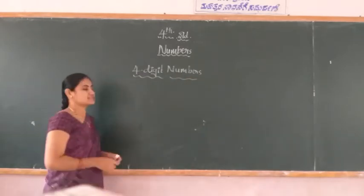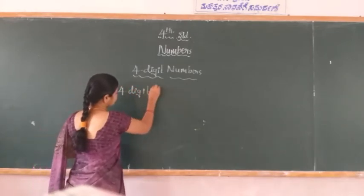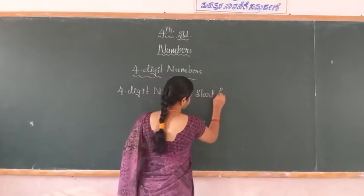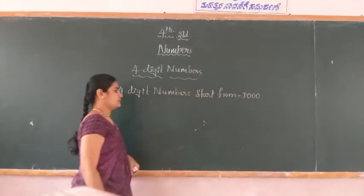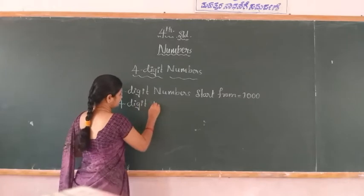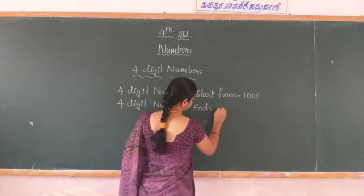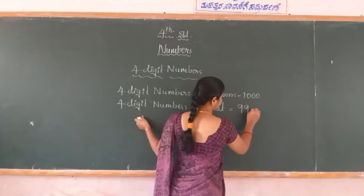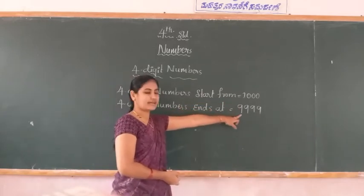4-digit numbers start from 1000. The 4-digit numbers start from 1000 and end at 9999.